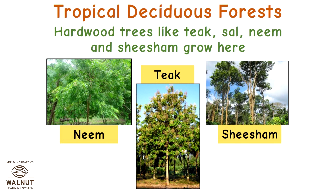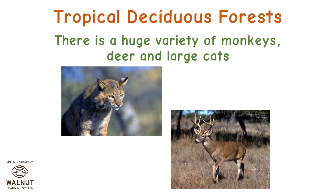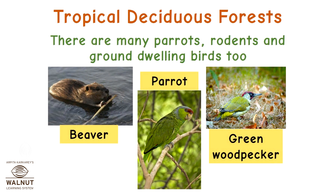Hardwood trees like teak, sal, neem, and shisham grow here. There is a huge variety of monkeys, deer, and large cats. There are many parrots, rodents, and ground-dwelling birds too.